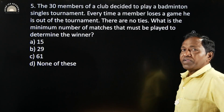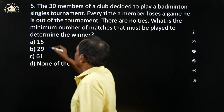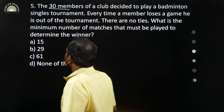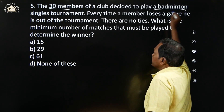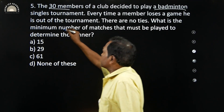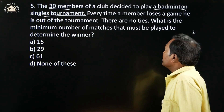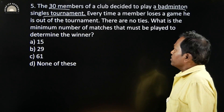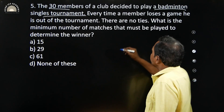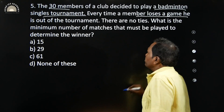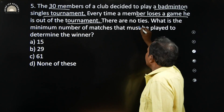The 30 members of a club decided to play a badminton singles tournament. Every time a member loses a game, they are out of the tournament. There are no ties.